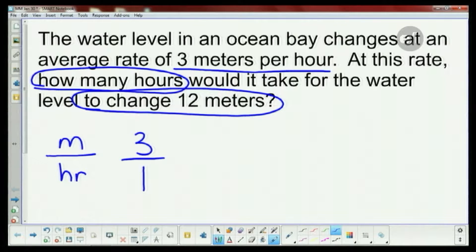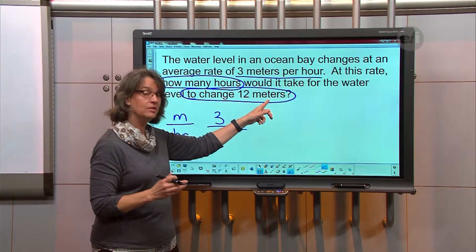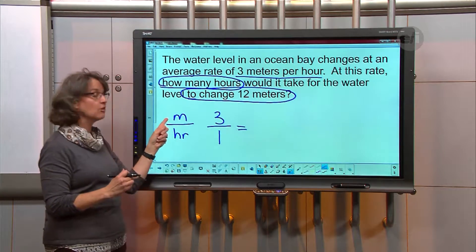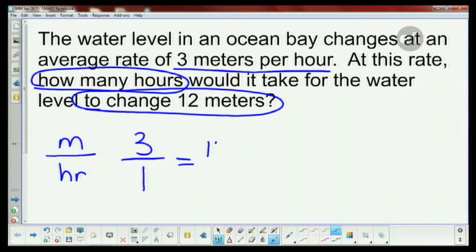Now I want to know how many hours would it take for the water level to change 12 meters. So now I shouldn't have any question about where the 12 goes because it's labeled with meters. My base ratio says to put the meters on the top, so I'm going to put the 12 on the top. And this one, x is what we're trying to find.